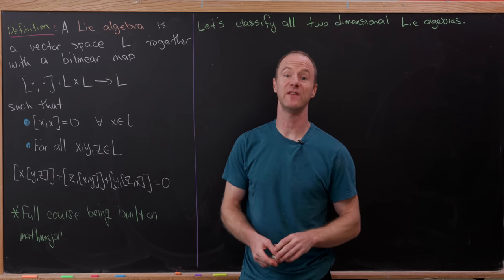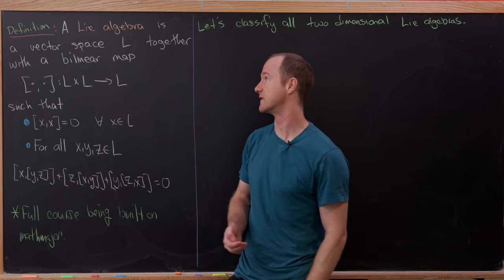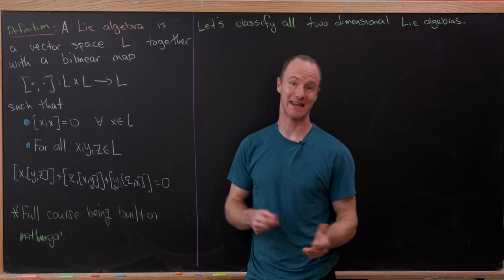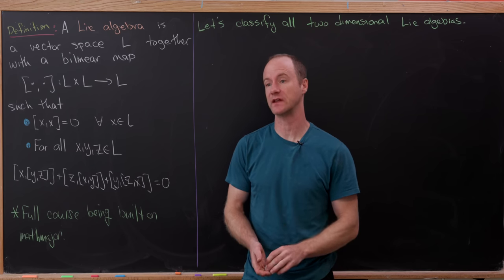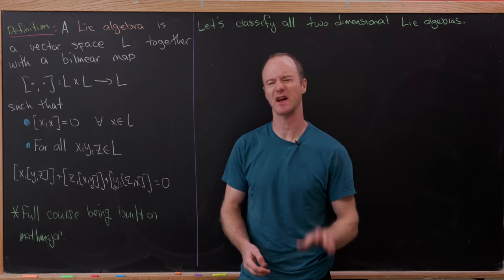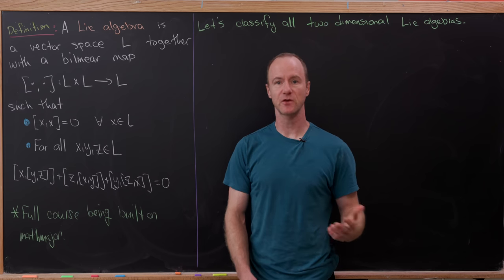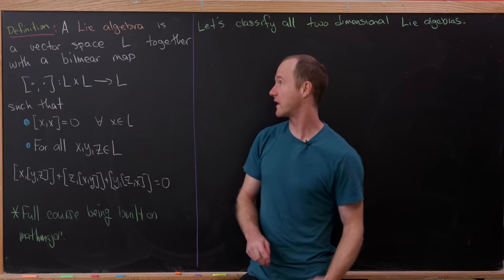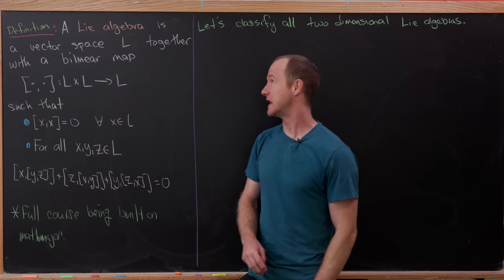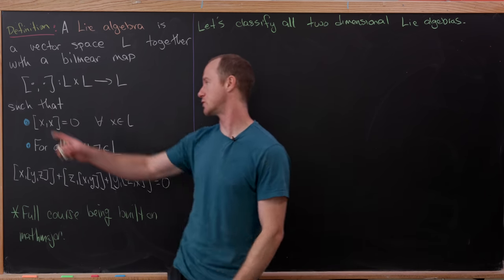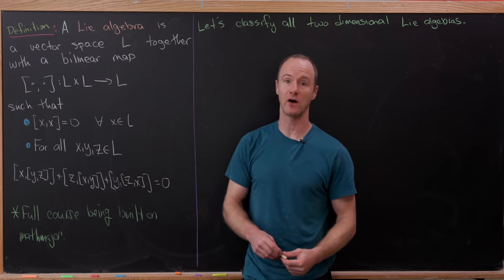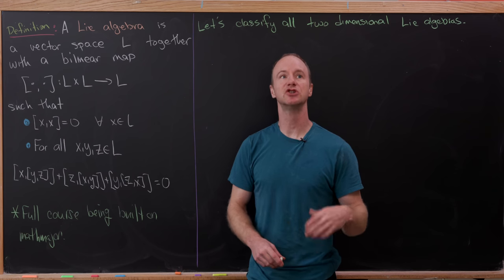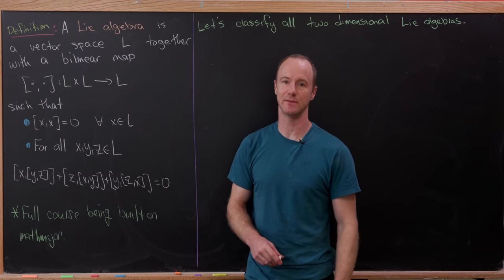Today we're going to talk about one of my favorite subjects: Lie Algebras. We're going to do what's considered a fairly standard exercise involving Lie Algebras when you're just learning the subject for the first time. So let's first recall the definition. A Lie Algebra is a vector space, we'll call it L, over any field, together with a bilinear map — we'll call it the bracket — from L cross L to L, satisfying two conditions in addition to bilinearity.